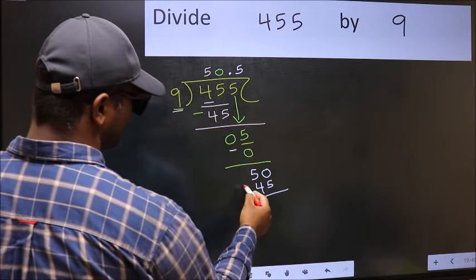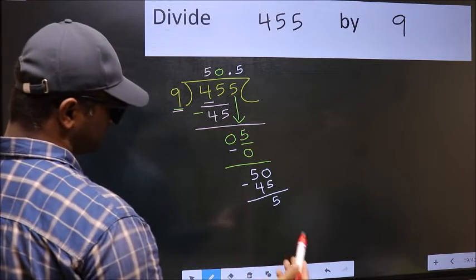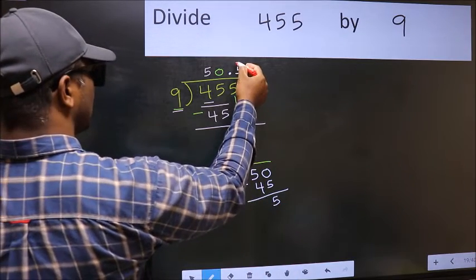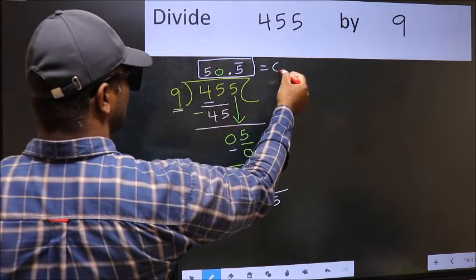Now you should subtract. We get 5. We got 5 again. That means we get bar on this number. So this is our quotient.